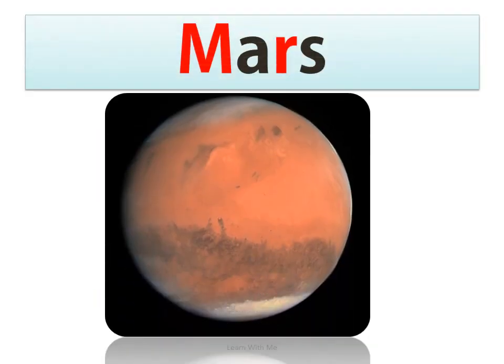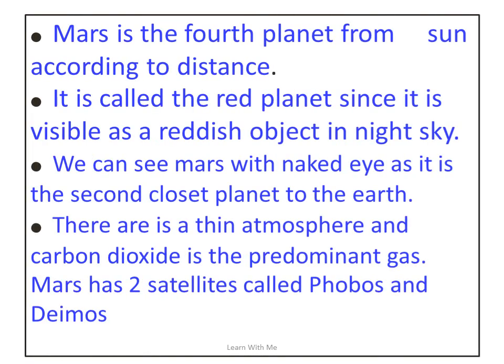Mars is the fourth planet from the Sun according to distance. It is called the red planet. We can see Mars with the naked eye as it is the second closest planet to Earth. There is a thin atmosphere and carbon dioxide is a prominent gas. Mars has two satellites called Phobos and Deimos.